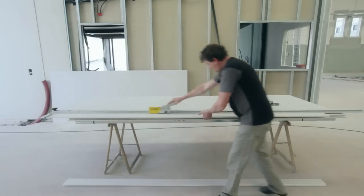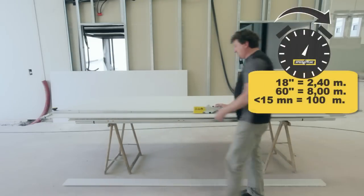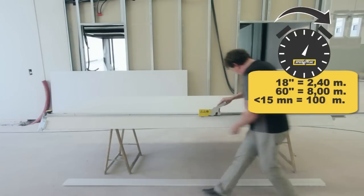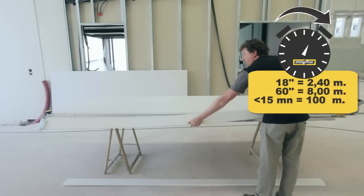SpeedPlaq, like the name says, is extremely fast. A halfway motivated fitter with a little bit of experience can cut up to 100 meters of plasterboard in less than 15 minutes.